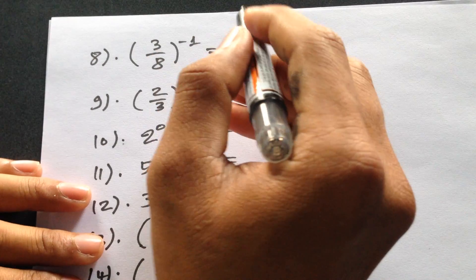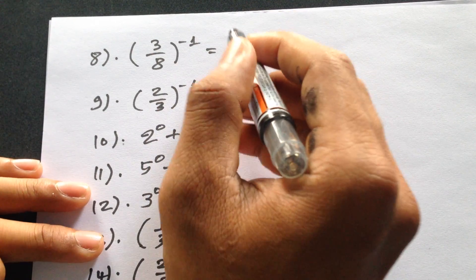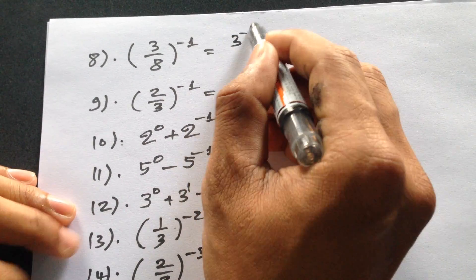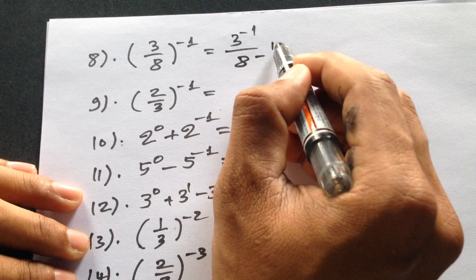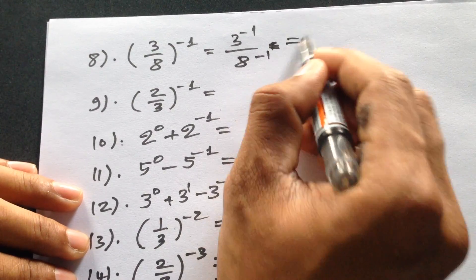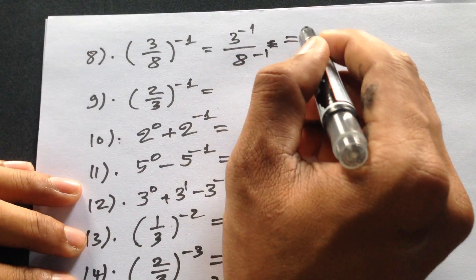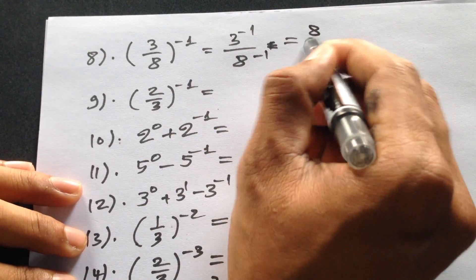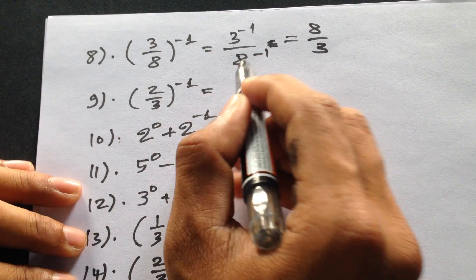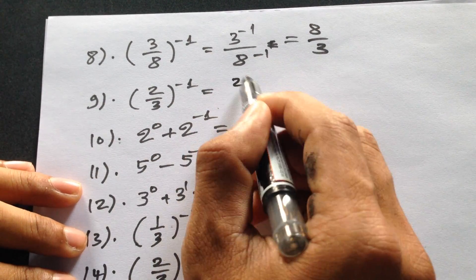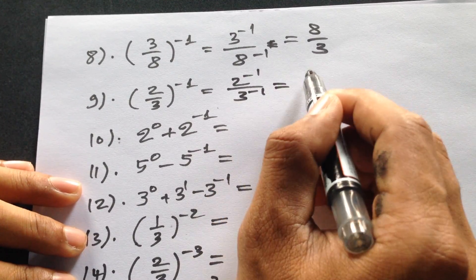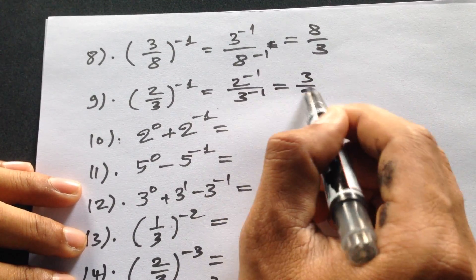You can get the answer — it will be 3 to the power minus 1 and 8 to the power minus 1. So what is the answer? It will be 8 divided by 3. How about this? It will be 2 to the power minus 1 and 3 to the power minus 1, so it will be 3 divided by 2.